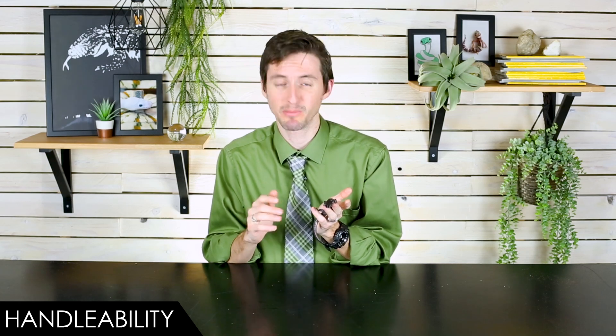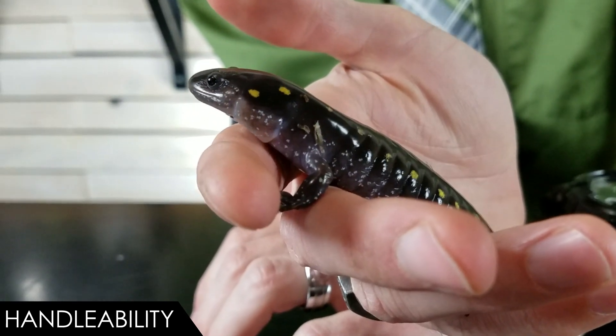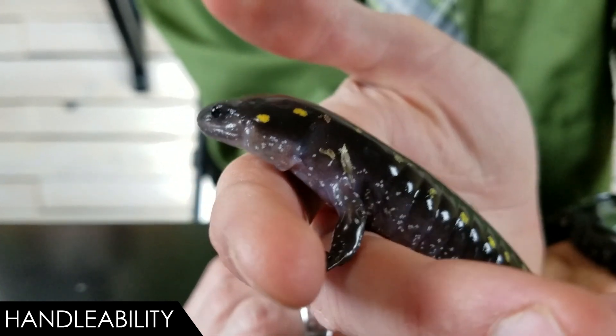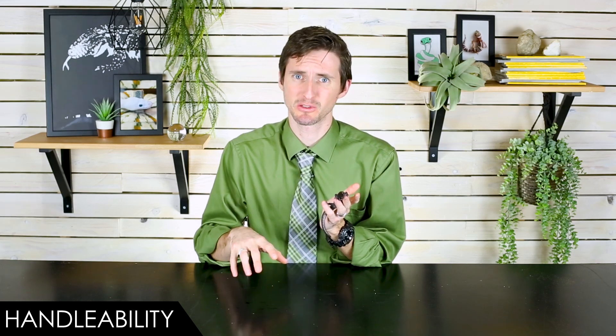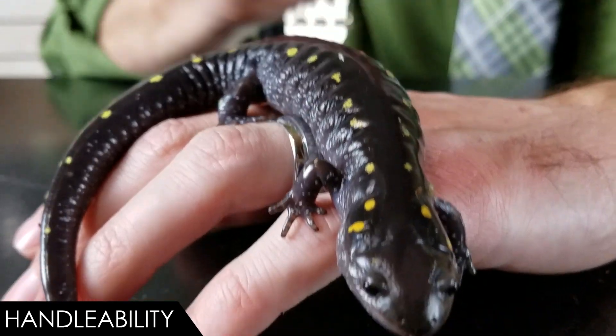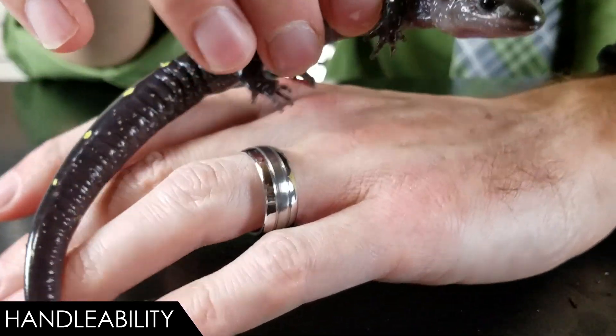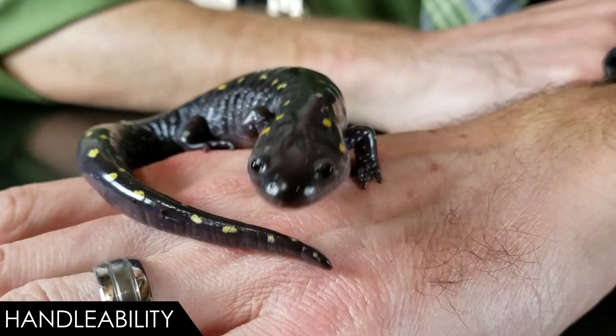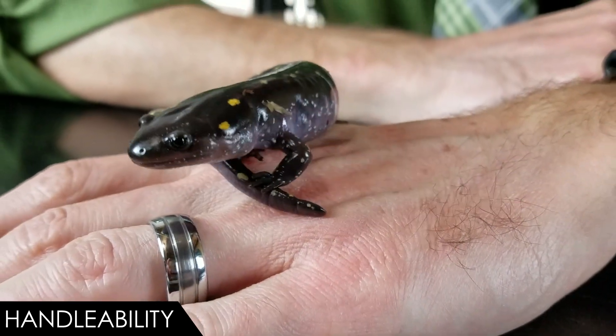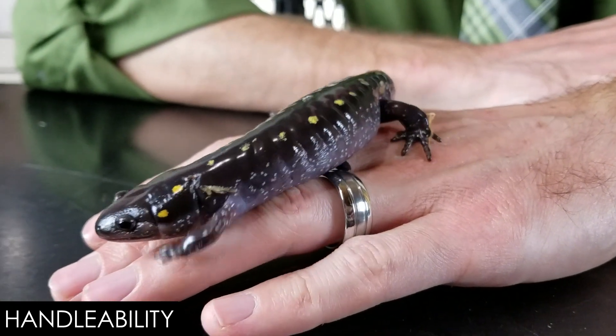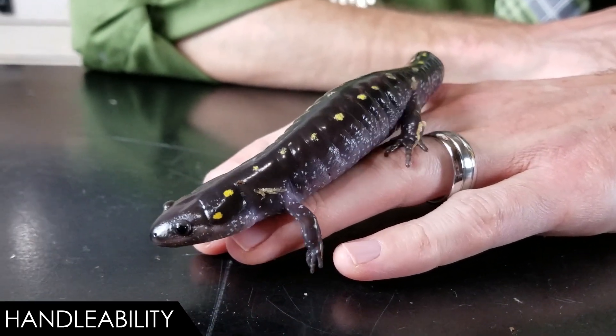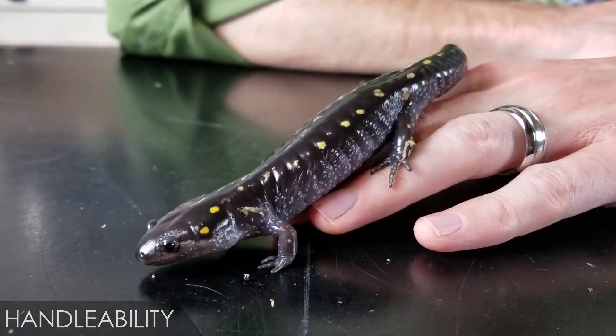Just like all amphibians, they've got a permeable skin through which moisture but also chemicals that might be on your hands can penetrate. Whatever's on your hands could actually end up inside of their body. As a result, if you ever decide to handle your salamanders, you should make sure that your hands are very clean, not just clean from dirt but also washed off very thoroughly so there's no residue of soap or anything like that on them. Even then, just keep handling to a minimum. Other than that though, they're perfect for handling.